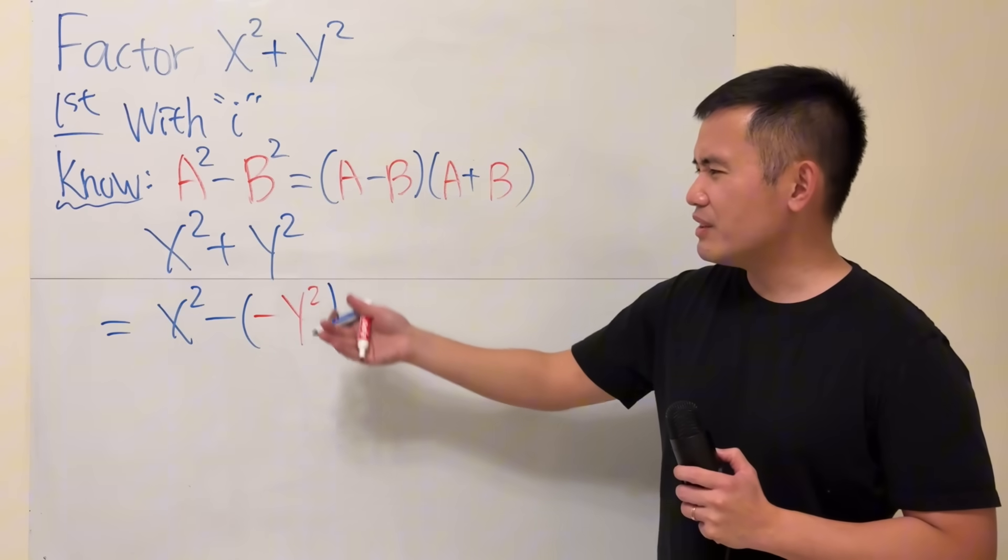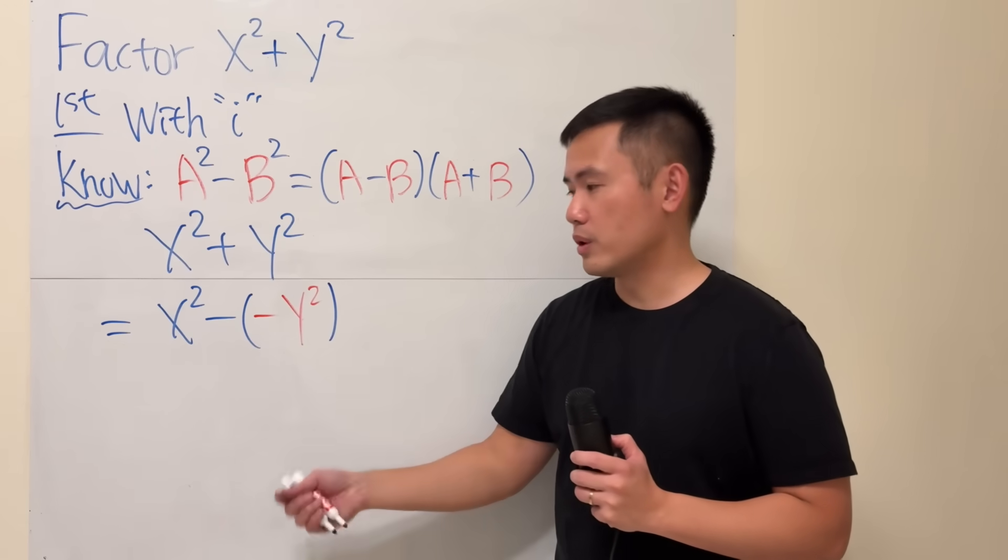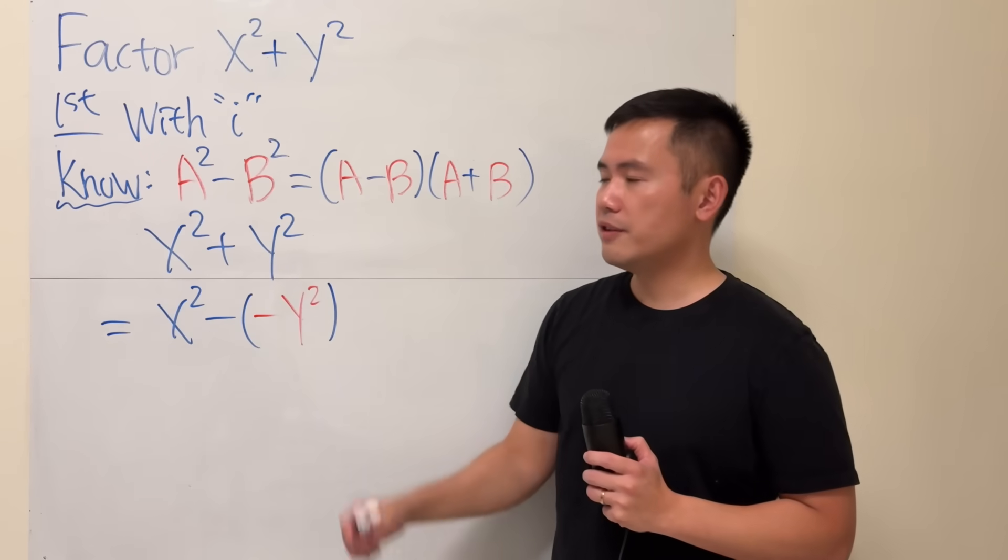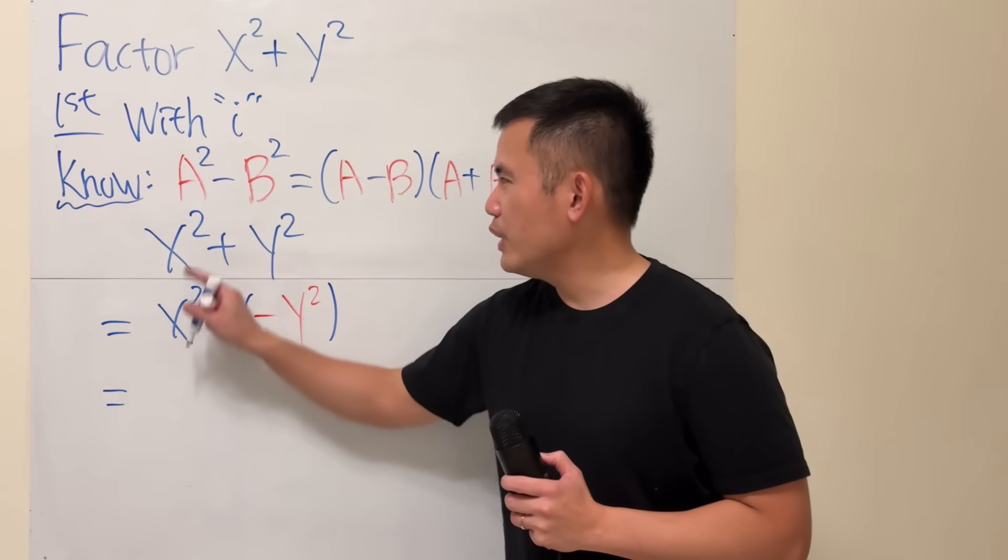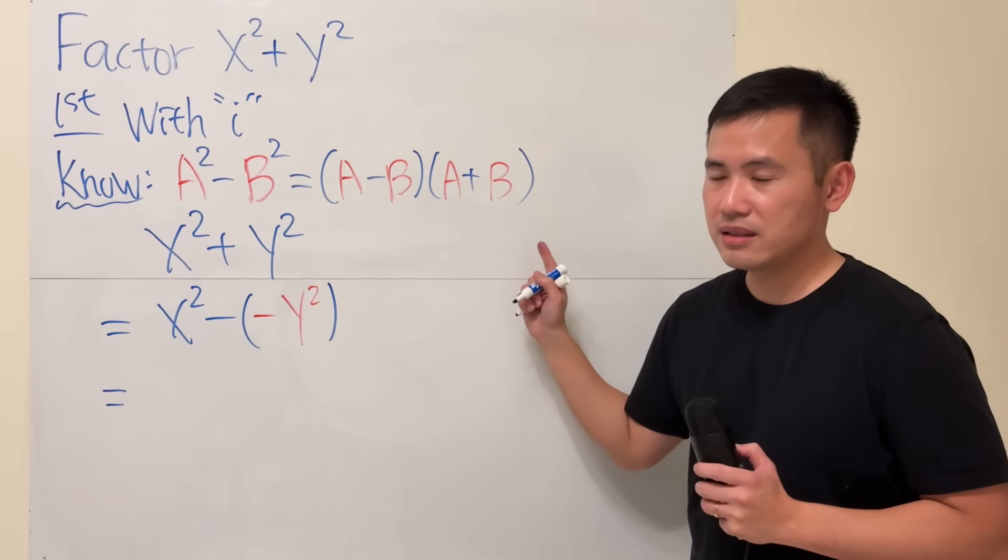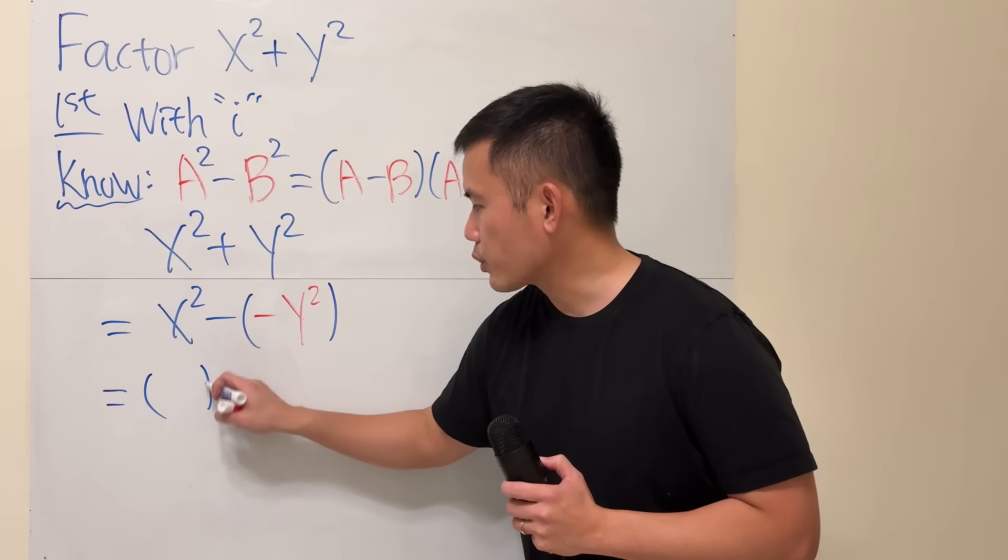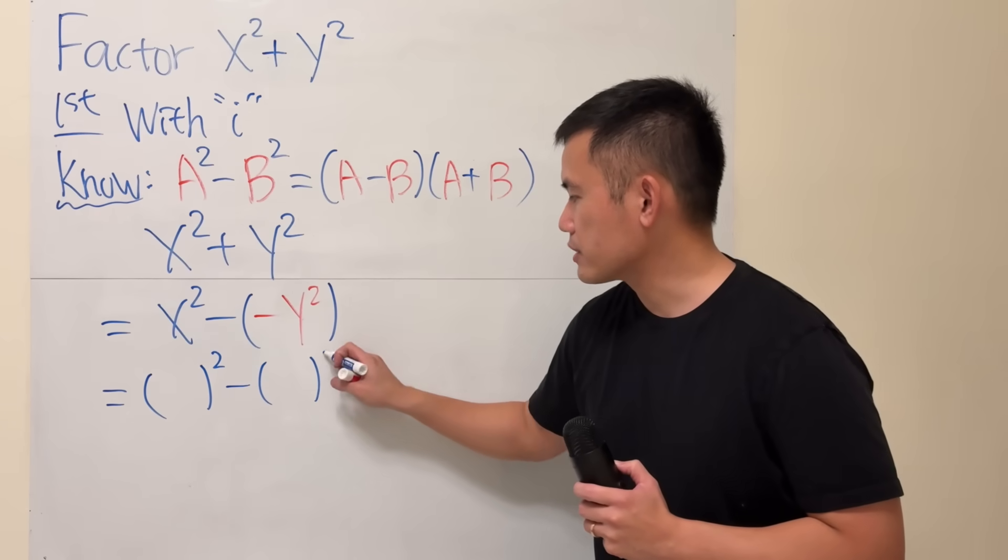So far, I haven't changed anything too crazy. We're still in the real world. Negative times a negative gives us positive. Now, in order for us to utilize this, we want something square minus something square.